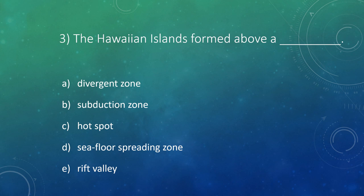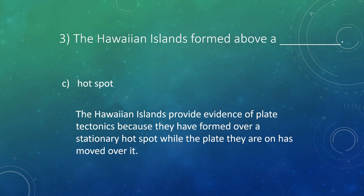Question 3: The Hawaiian Islands formed above a blank. The answer is a hotspot. They provide evidence of plate tectonics because they formed over a stationary hotspot while the plate they are on has moved over it.